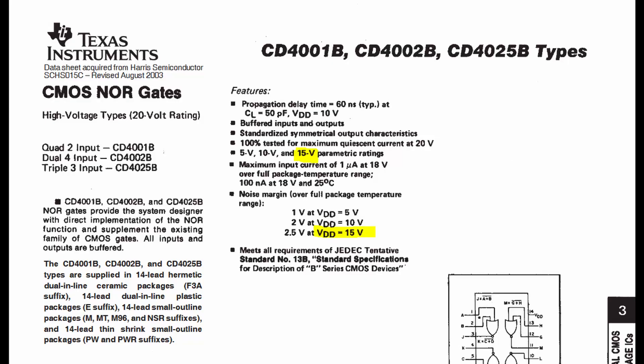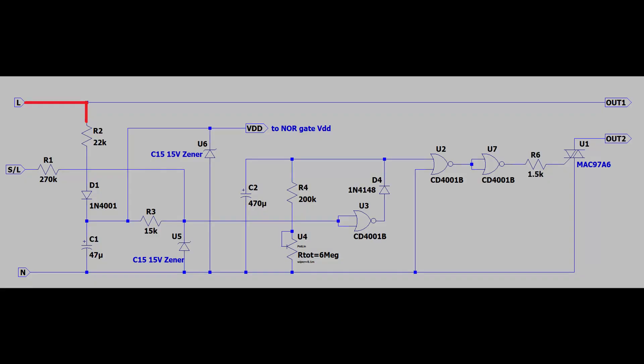The datasheet for the CD4001B shows that it has a supply voltage of 15V. The mains voltage is first current limited through the 22kΩ resistor to a theoretical maximum of 15mA at 240V AC here in the UK. This is then halfway rectified through the 1N4001 diode and smoothed by the 47μF capacitor. The 15V zener diode then acts as a regulator to keep the voltage at around 15V.